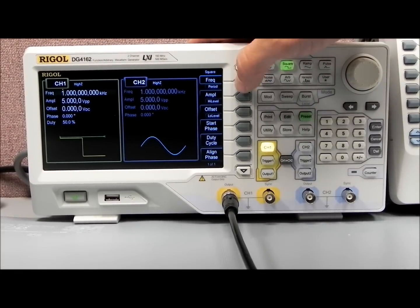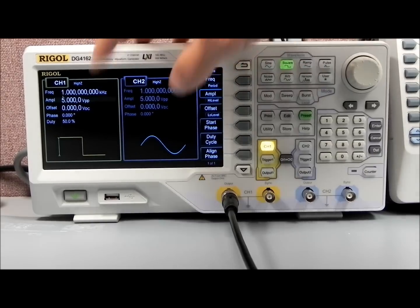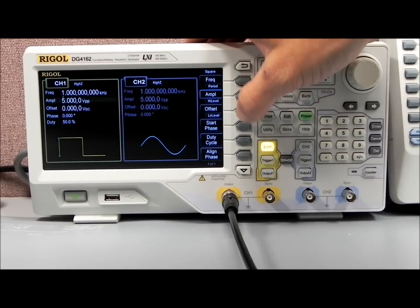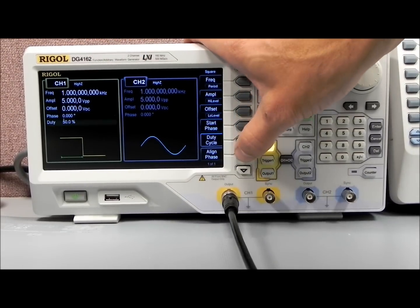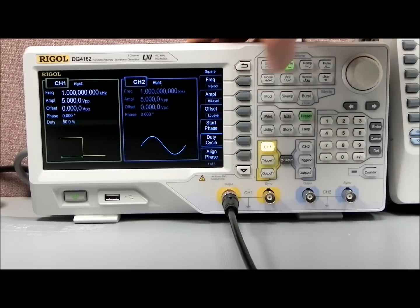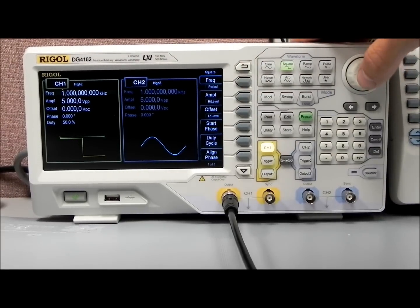And so we can select frequency, or we can select amplitude, you'll see the marker move down, or offset, start phase, duty cycle, align phase. Let's go to frequency, and there are a few different ways we can enter that information.